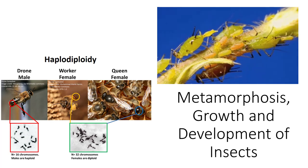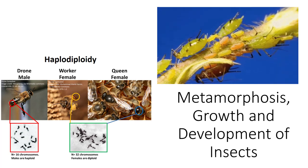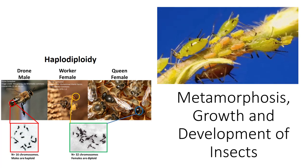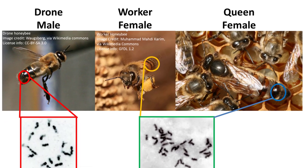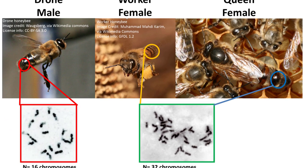Parthenogenesis is not that common, with sexual reproduction being the most common. Insects like honeybees go through haplodiploidy, a combination of sexual and asexual reproduction where unfertilized eggs become male drones and fertilized eggs become females, mostly workers.